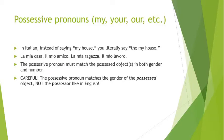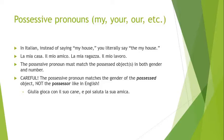That's a mental switch you have to make when learning Italian. For example: 'Giulia gioca con il suo cane e poi saluta la sua amica' — Giulia plays with her dog and then greets her friend. 'Cane' is masculine, so I used 'il suo cane'; 'amica' is feminine, so I said 'la sua amica.' It doesn't matter Giulia's gender — we could replace her name with a masculine name like Matteo and the sentence doesn't change.